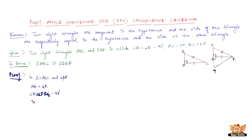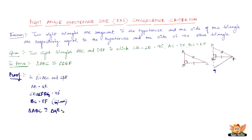And we have BC equals EF, which is given. So by the Side-Angle-Side criterion, we have proved that triangle ABC is congruent to triangle GEF.